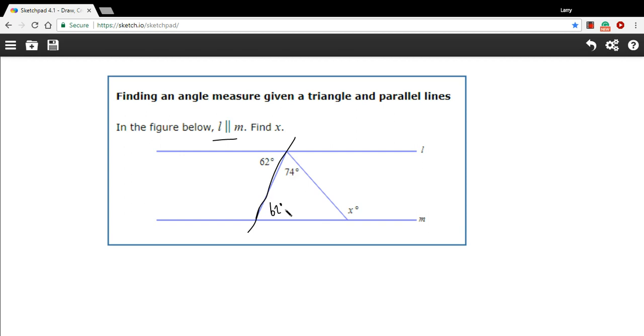And then 74 plus 62 would be 136. So this is going to be 44. And then this is a linear pair here. So you'd subtract 44 from 180, you'd get 136. So that's one way to arrive at that answer.